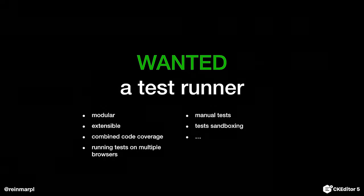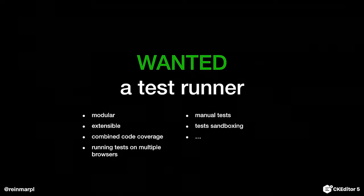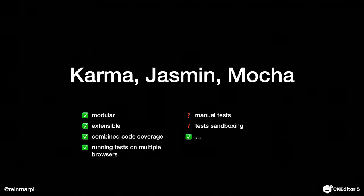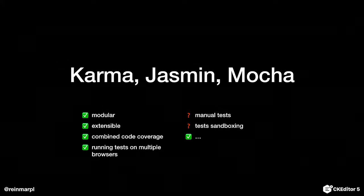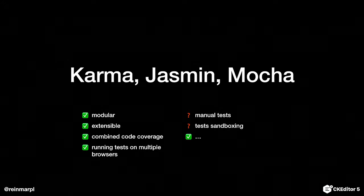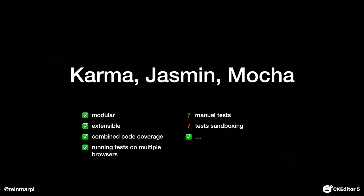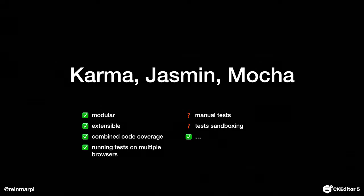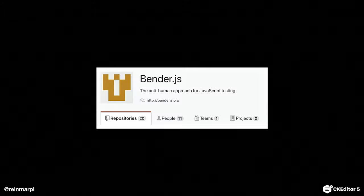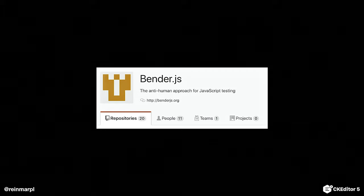So we had this list of requirements, and we did research of course. We checked that the existing solutions met most of those requirements, but two. We checked that we couldn't add those features easily to the existing TestRunners — there were some gaps. So we thought, okay, this is our chance. Let's build a new TestRunner for the JavaScript community.